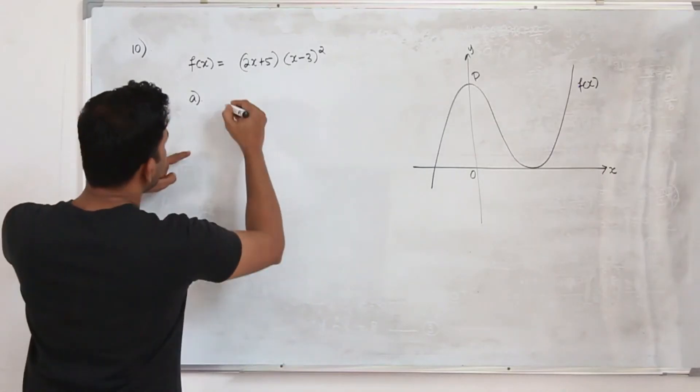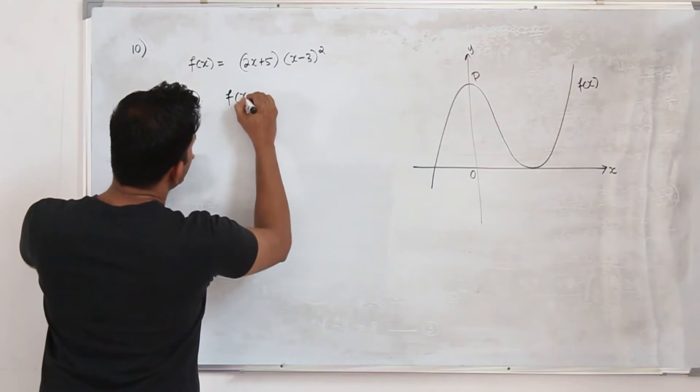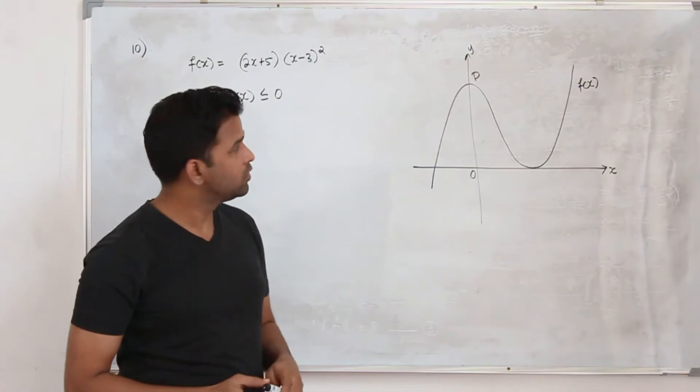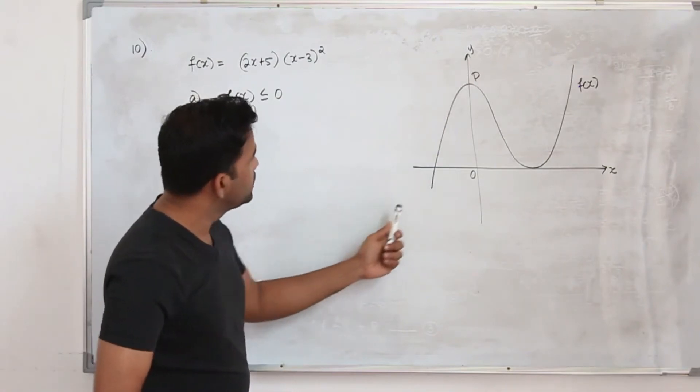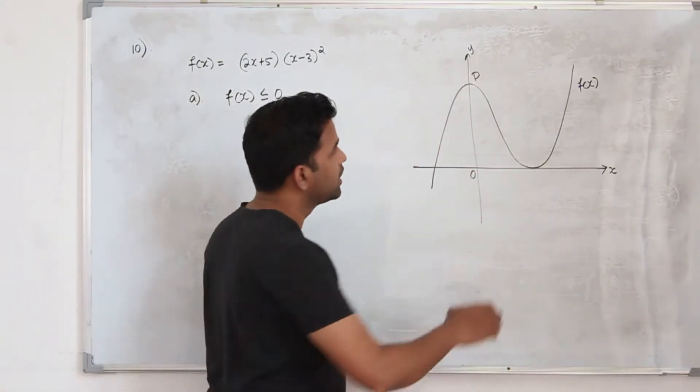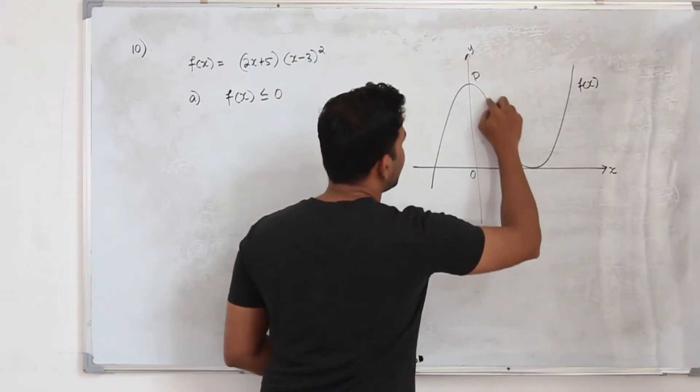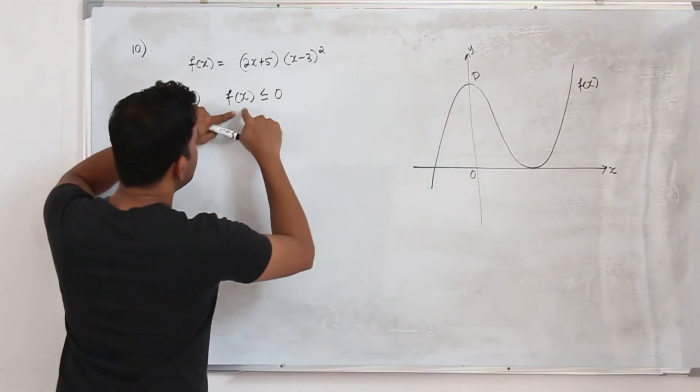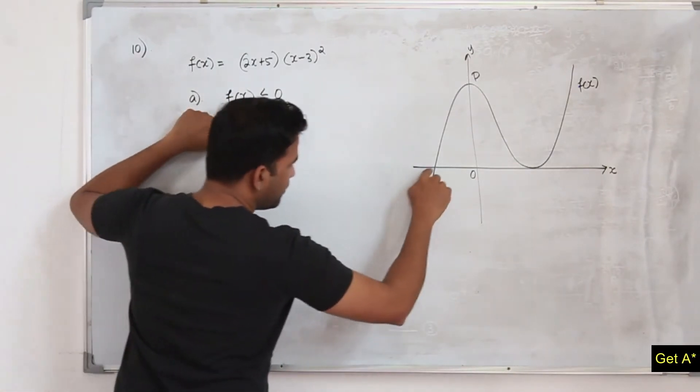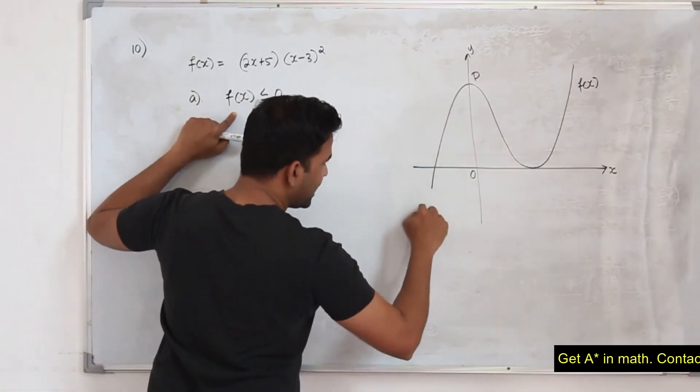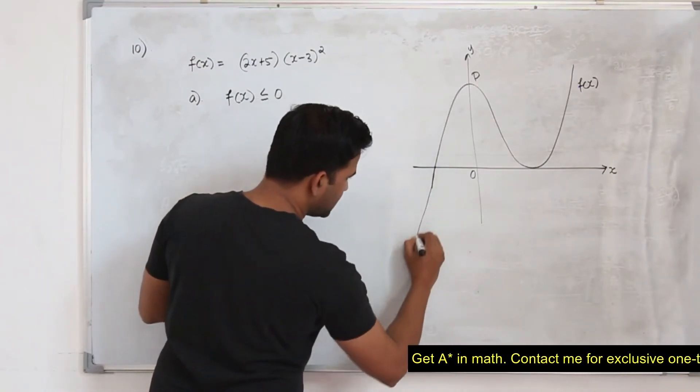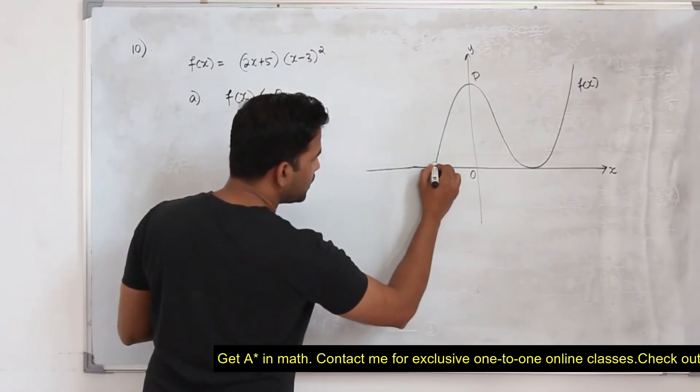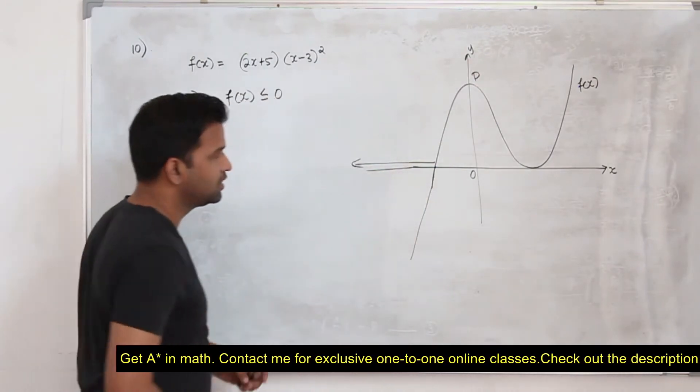Here they want you to find the values of x which satisfy this inequality f(x) less than or equal to 0. When you take a look at the graph, here the graph takes only positive value because y is positive. The function becomes negative when the curve goes below the x axis. So this part, the corresponding x value is this.